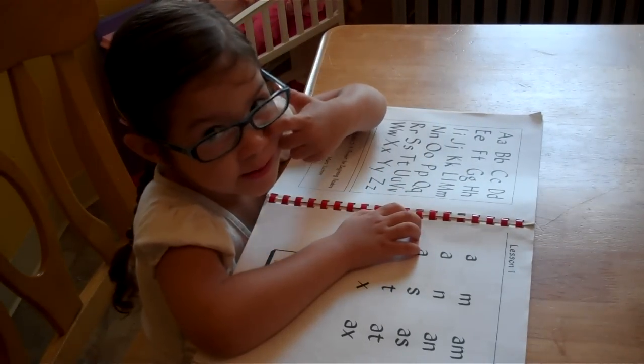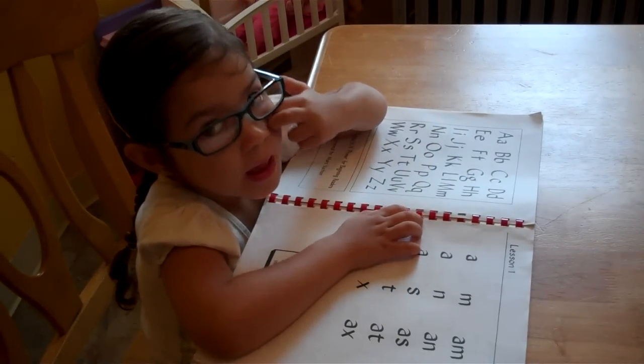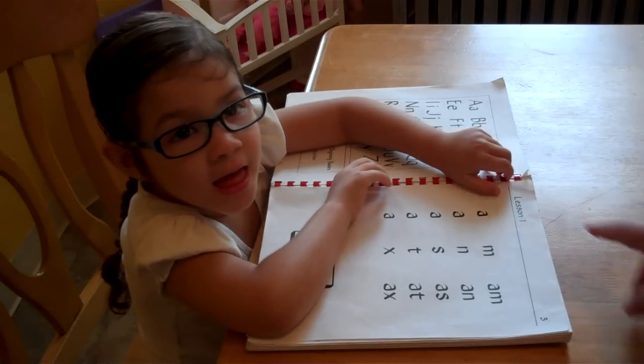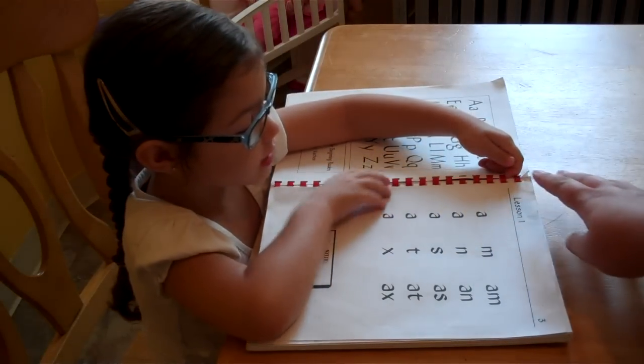Okay, this is Mani, and she is three years old, and right now we're working with Alphaphonics, okay? Ready? This is the first lesson, this is the second time she's done this.